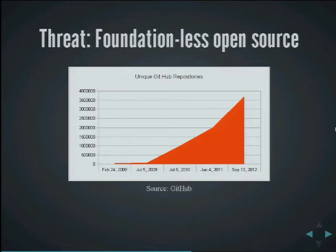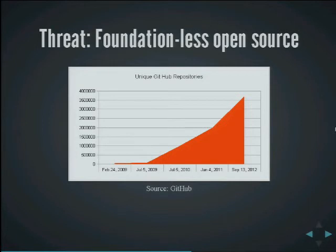One of them is this idea of foundationless open source — some people have called it post-open source — with the explosion of popularity of forges like GitHub. Three years ago GitHub had 10,000 repositories, and as of last month they had nearly 4 million unique repositories. So there's definitely something going on here — it's amazing the rate of growth, and there's got to be some reasons behind it.